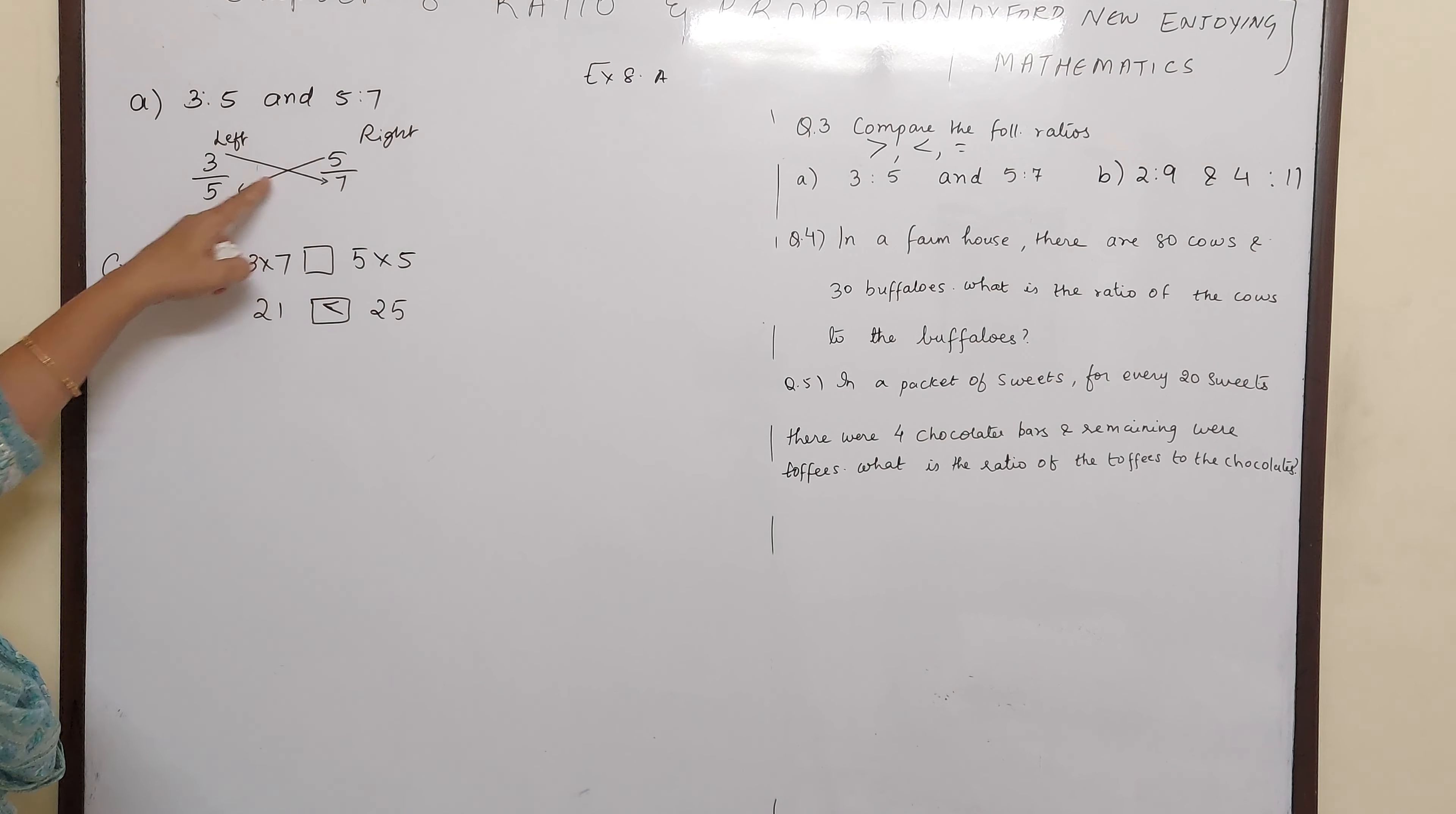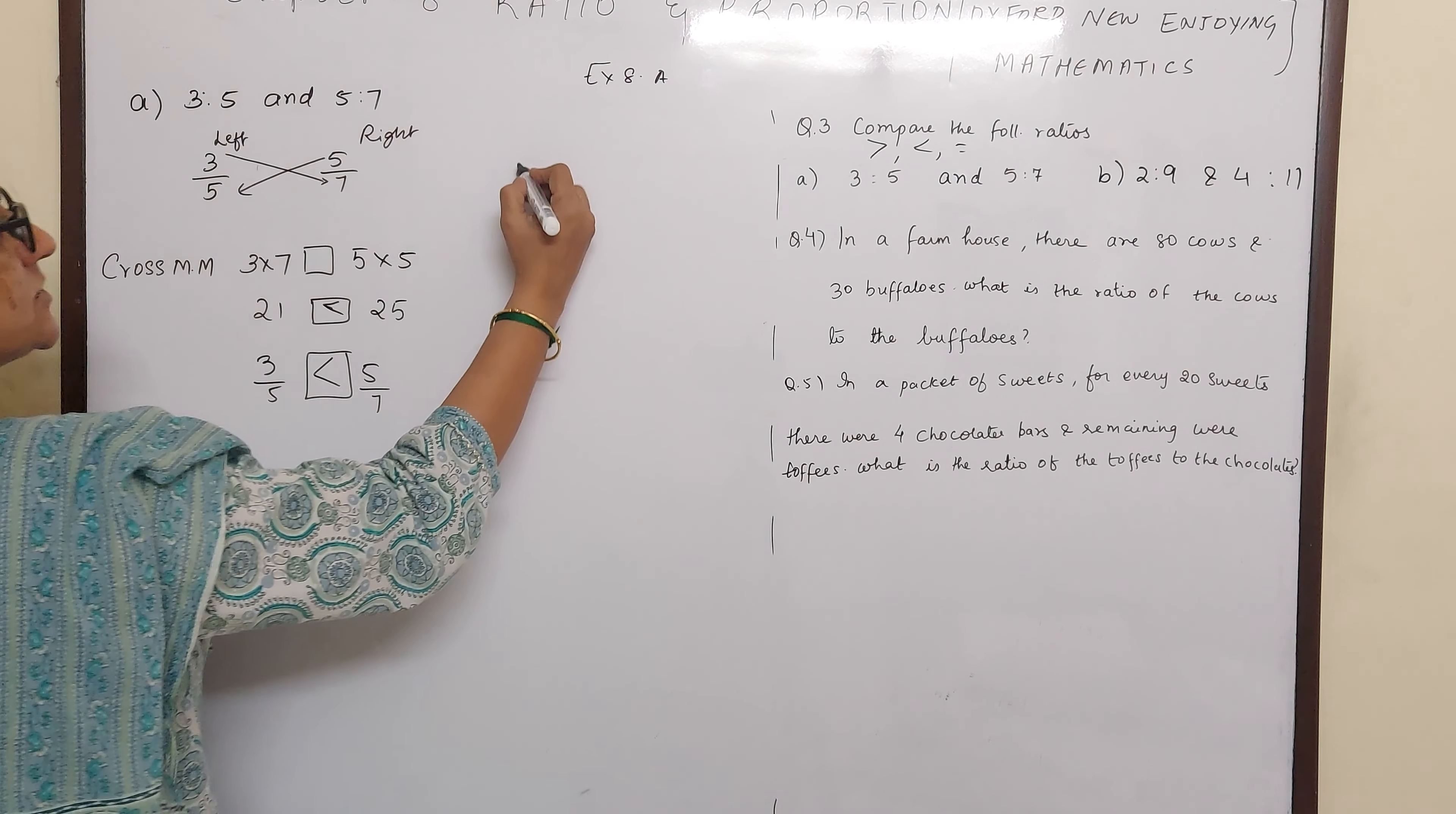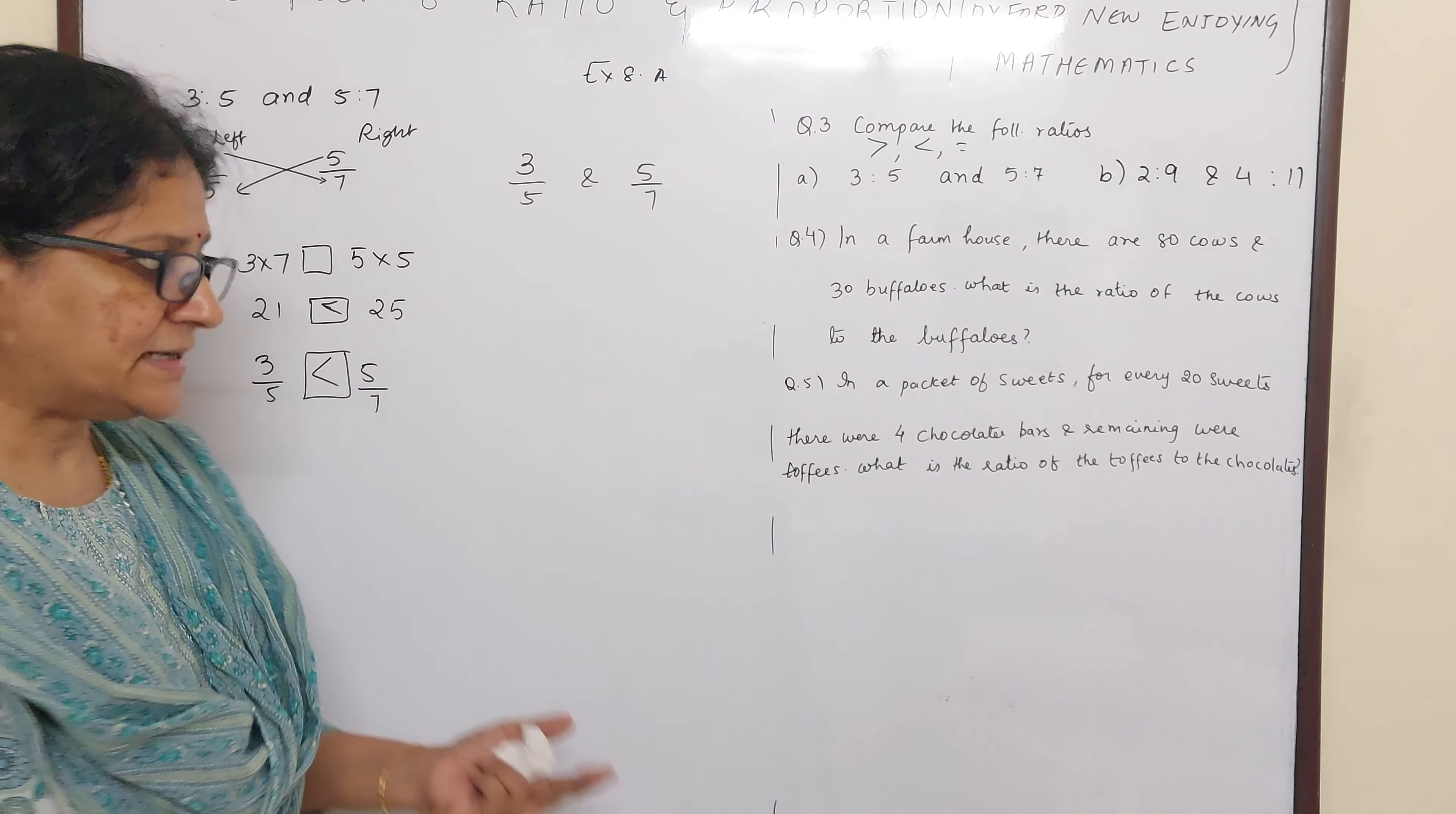So if this side is bigger, 3 by 5, 5 by 7, this side is greater. So you can finish it up like this in one step. Some schools insist on like fractions gaining marks in two steps. So in that case how will you do? 3 by 5 and 5 by 7. The denominators are not same.